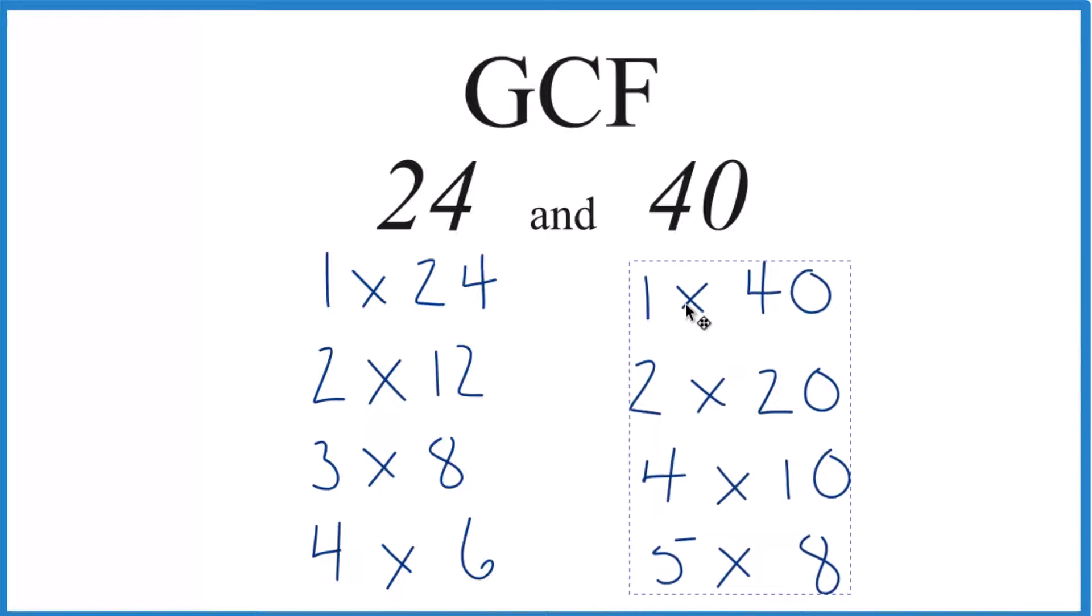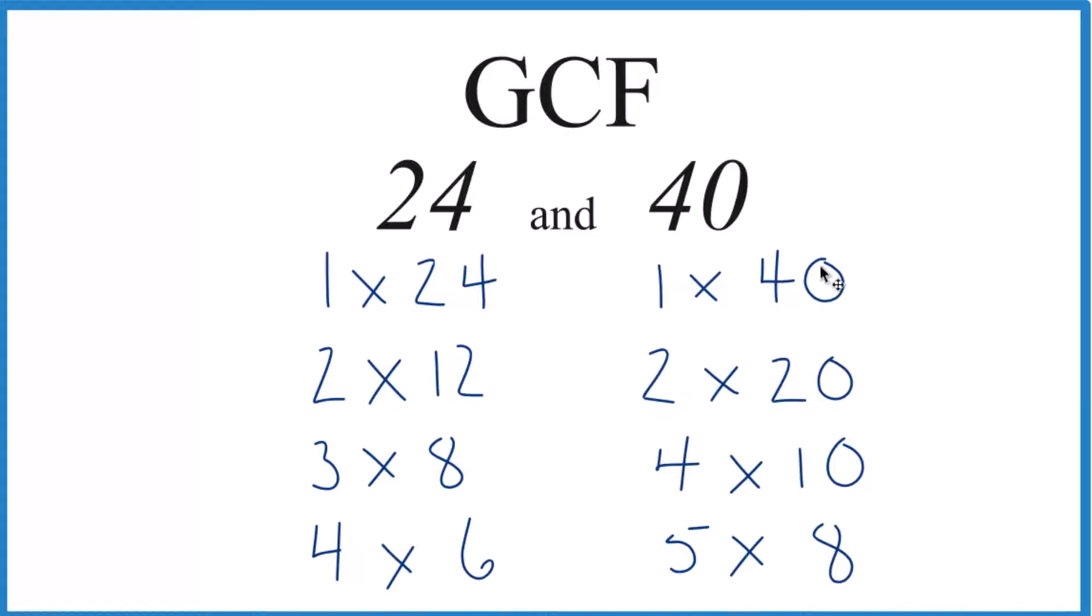For 40, these are the factors for 40. Same thing here. So 1 times 40 is 40, or 5 times 8. These are the factors.